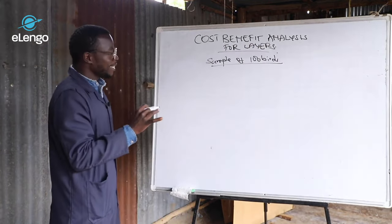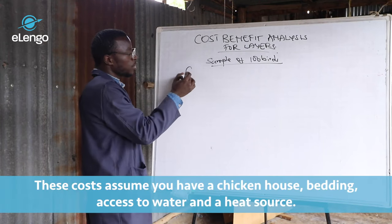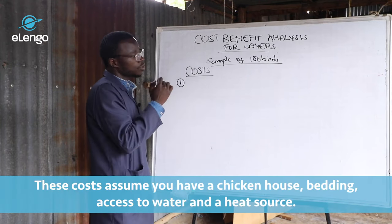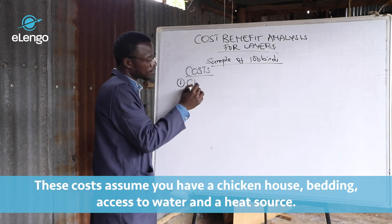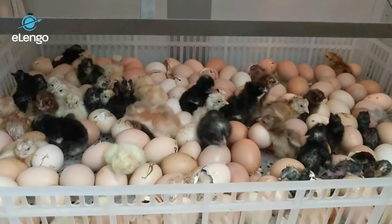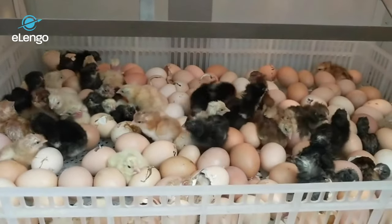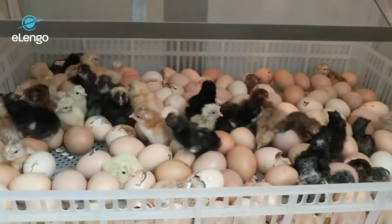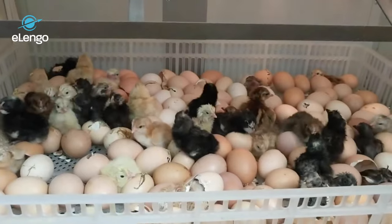The first item on our cost list — we're doing costs. The first item would be chicks, or day-old chicks, which are 100 at $1 per chick, a total of $100.